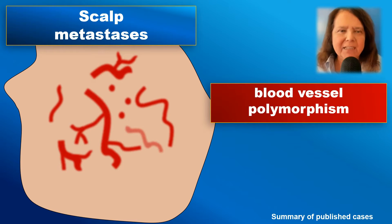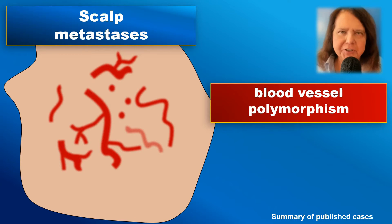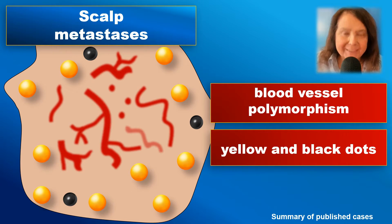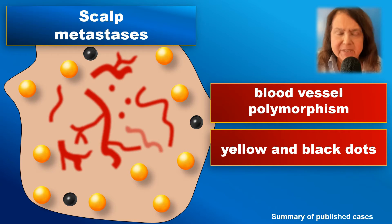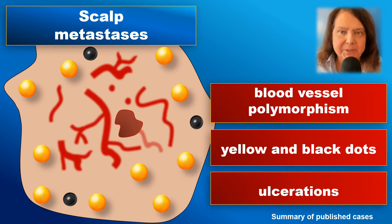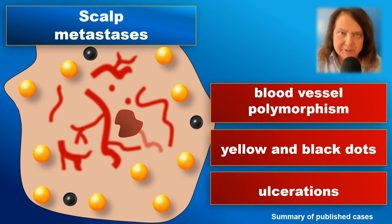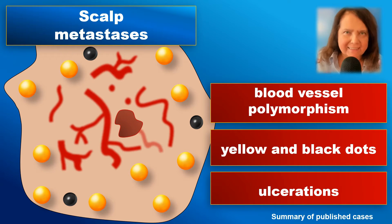The analysis of scalp metastasis described in the literature indicates that the most typical trichoscopy features include polymorphic blood vessels, the presence of yellow dots usually at the periphery, and sometimes black dots and ulceration. Scalp metastasis may show features both clinically and in trichoscopy that are typical for cicatricial alopecia and non-cicatricial alopecia in the same patient, and sometimes even in the same field of view.